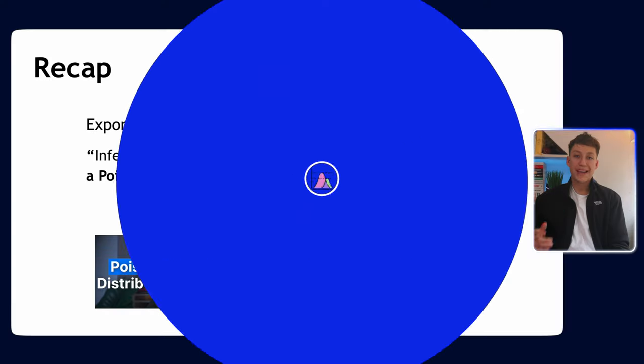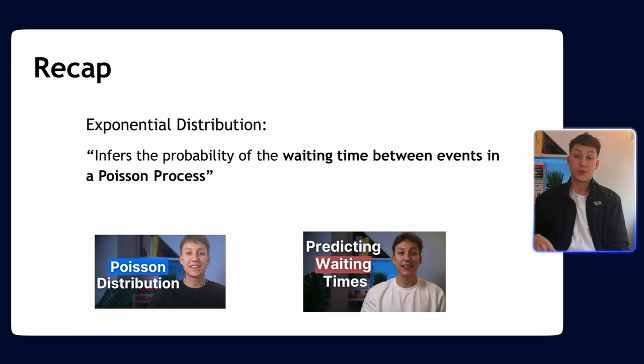Let's start by quickly recapping where the gamma distribution really comes from. It comes from something called the exponential distribution, which is something I did my previous video on, so feel free to check that out if you want more information. The exponential distribution infers the probability of the waiting time between events in a Poisson process.